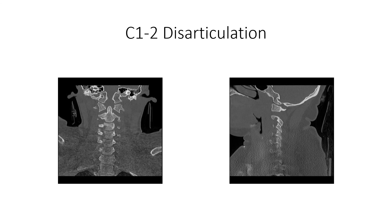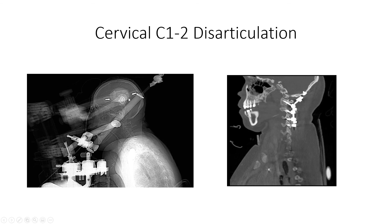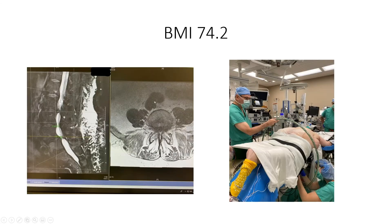This is an example of a very difficult case — a C1-2 disarticulation from a car accident where the patient essentially pulled C1 off of C2. We tried to position the patient but they lost monitoring signals once positioned, so we put them in a halo and tried again — doing our BodyTom work actually in a halo. There was a lot of apparatus needed to position this patient, but it went very well. We ultimately achieved a nice occipitocervical construct with the use of the BodyTom and navigation.